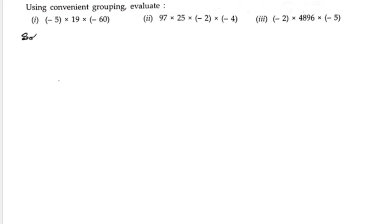Here we have (-5) × 19 × (-60). First I want to write (-5) × (-60) × 19. Minus times minus is plus, so 5 times 60 is 300, times 19.